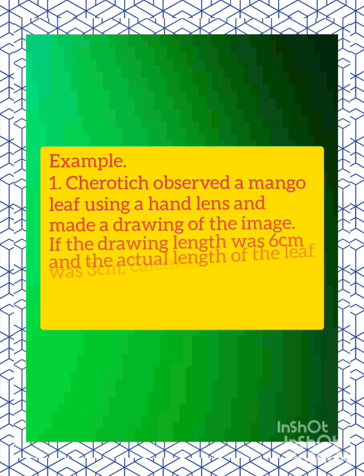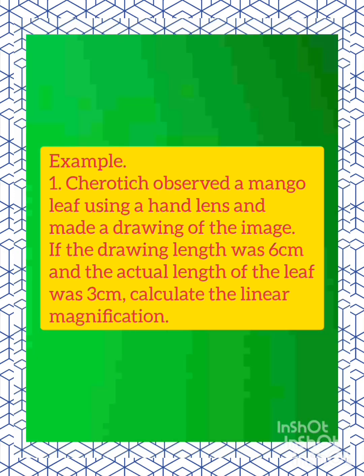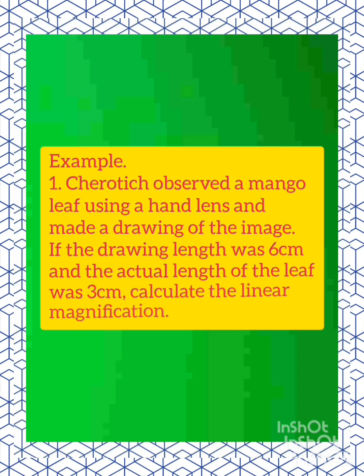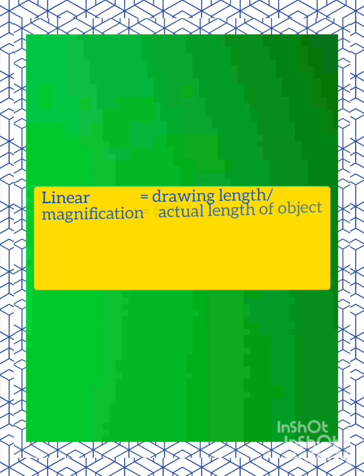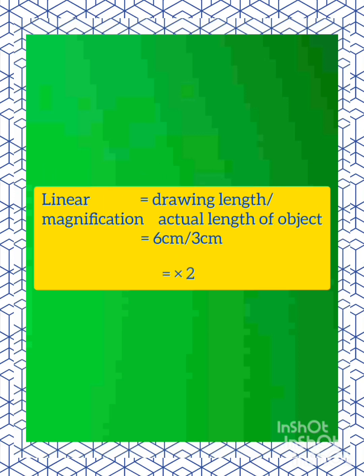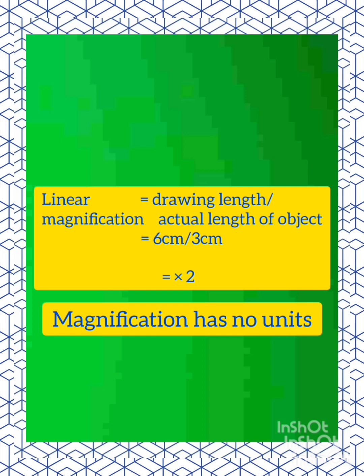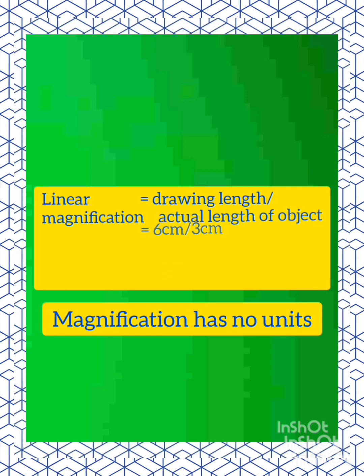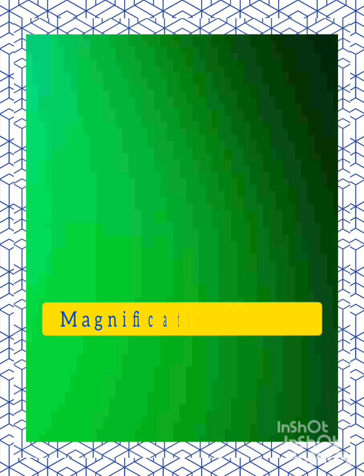Here is an example of a question on calculation of linear magnification. Work out the question before you look at the answer. Linear magnification equals drawing length over actual length of object, equals 6 cm over 3 cm, equals ×2. Magnification has no units.